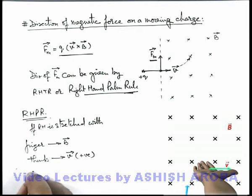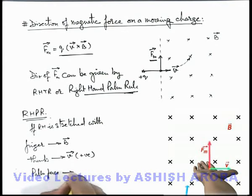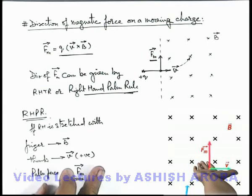Then we can say the palm face will give us the direction of magnetic force vector. Here you can see that magnetic force is acting in upward direction. So this is the way how right-hand palm rule is applied. You can also visualize it by using your own right-hand palm because in many different situations you need to use this rule.